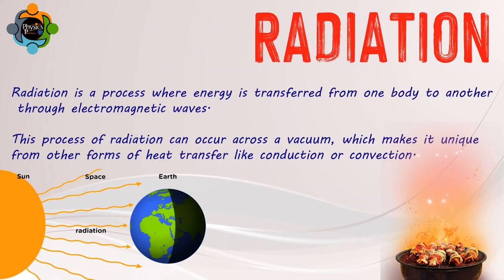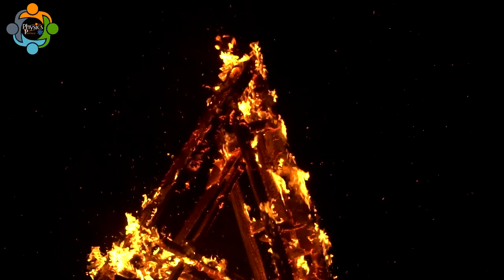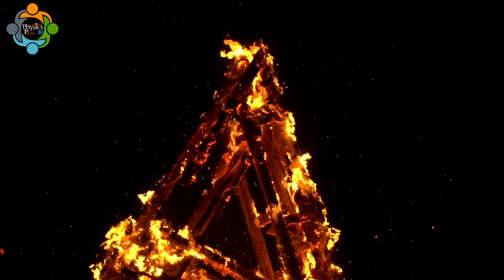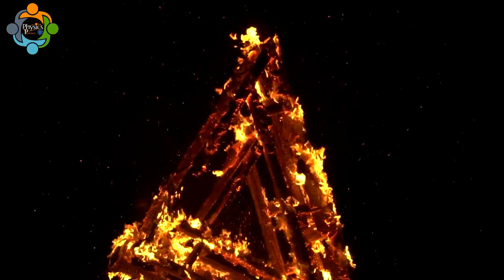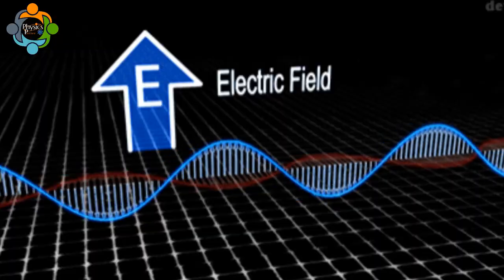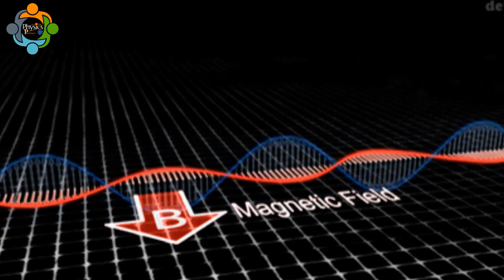Radiation is a process where energy is transferred from one body to another through electromagnetic waves. This process can occur across a vacuum, which makes it unique from other forms of heat transfer like conduction or convection. When we refer to a body radiating heat, we are talking about its transfer of energy to the surrounding environment in the form of electromagnetic waves.